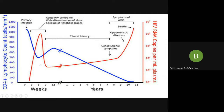When infection starts, it almost takes three weeks to begin and then peaks up. During the primary infection, the CD4 cells are actively fighting against HIV. Suddenly there is a drop in CD4 cells, indicating that HIV has overtaken them — there is a sharp peak here. This is known as acute HIV syndrome, with wide dissemination of virus and seeding of lymphoid organs, meaning the virus has entered the CD4 cells.